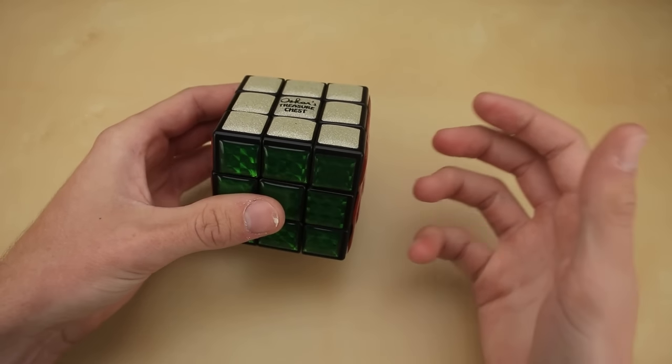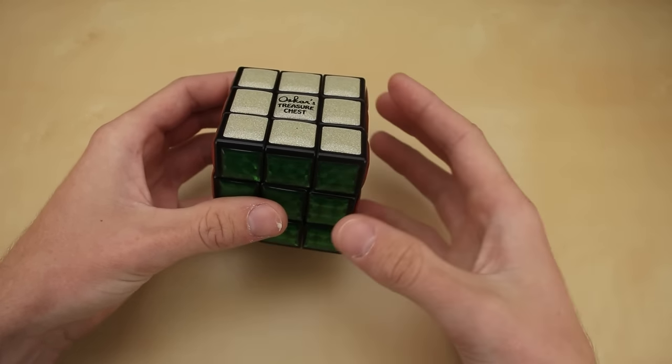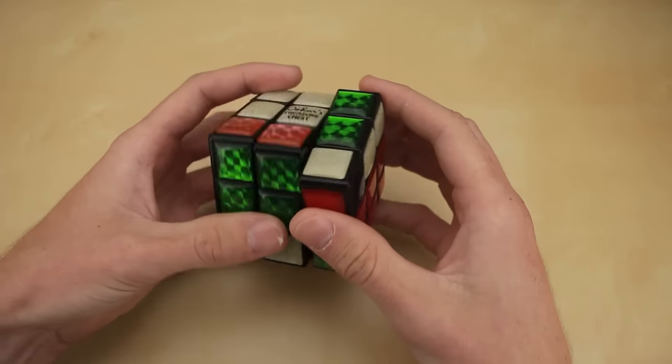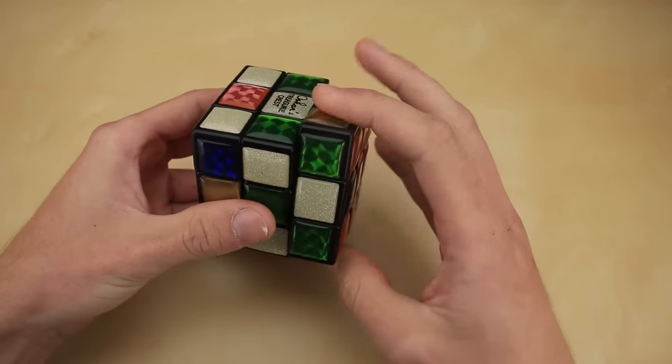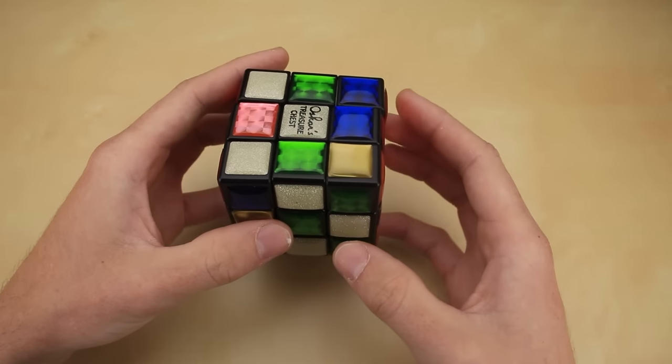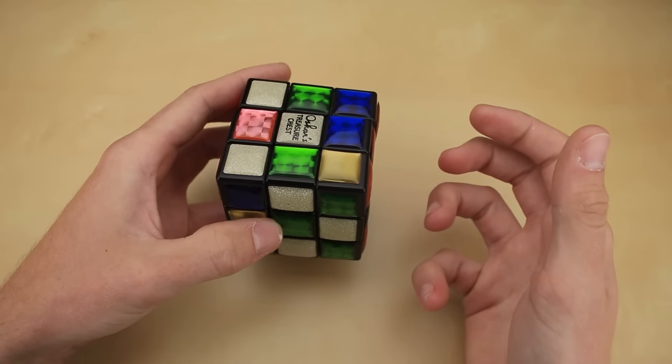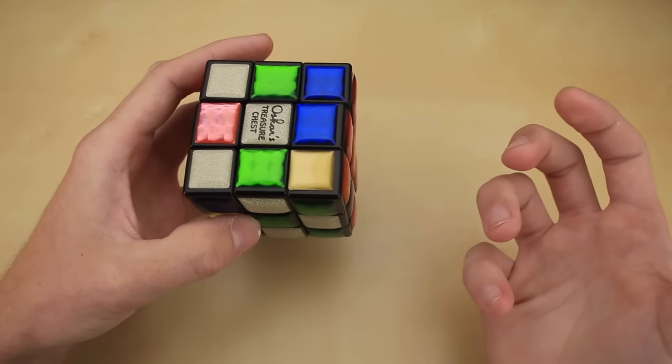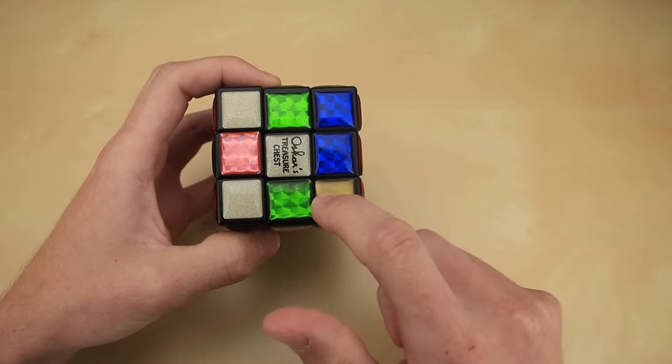Well, what if instead of opening up once the cube is solved, we modify it so that it only opens up once the cube is scrambled into a very specific position? Maybe you memorize the algorithm to get it into that position, you're the only person who knows it, it's like your secret password, and now you're the only one who can get into your treasure chest.